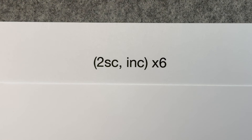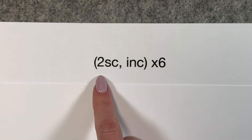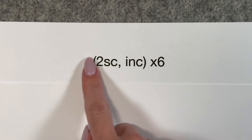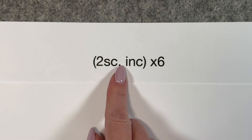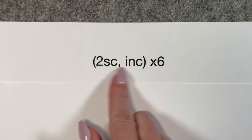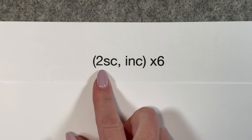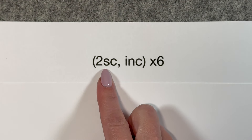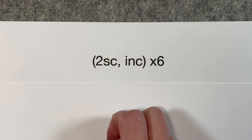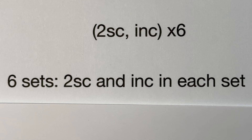Crochet sequences have sets. For example, when working in the round, you might have six sets of a sequence. A set is what's in the parentheses, and the sequence is when you repeat it six times. This pattern is telling us to do two single crochets and an increase six times — so we have six sets, each with two single crochets and an increase.